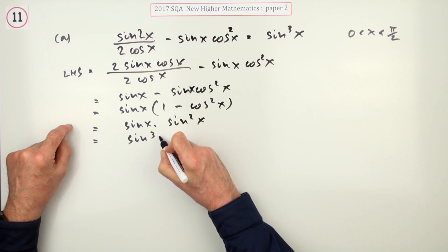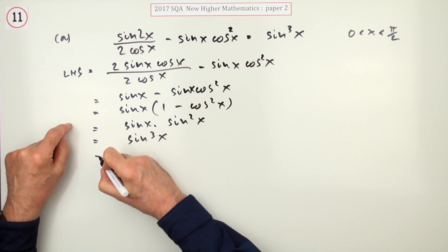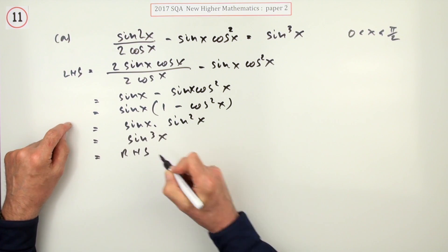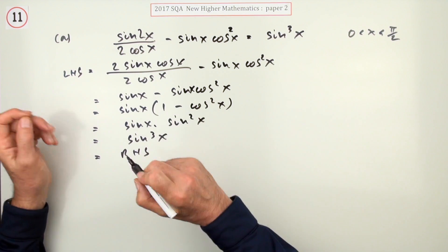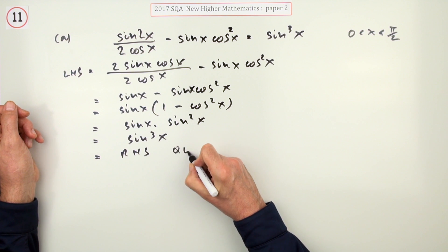Multiplying that out, sine cubed x, which is precisely what you want. So, you finish off by saying which equals the right hand side, and then use whatever phrase you want, as required, demonstrated, done, etc. QED.